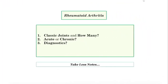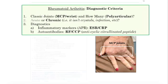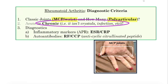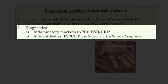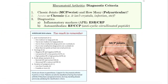Rheumatoid arthritis is the absolute prototype for taking the least amount of notes. Which joints? PIP and the wrist. How many? Polyarticular. Is it acute or chronic? It's chronic. The only issue about chronic is distinguishing it from infection or crystal. The key diagnostics: they'll have a high sed rate or CRP, but what they really go after are the autoantibodies — rheumatoid factor versus cyclic citrullinated peptide (CCP). For rheumatoid arthritis, the key thing is making the diagnosis, distinguishing it from osteoarthritis, and being familiar with methotrexate.